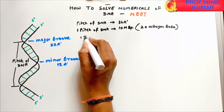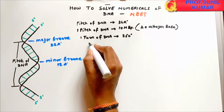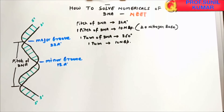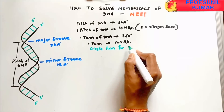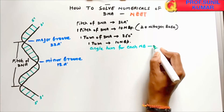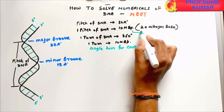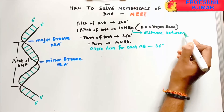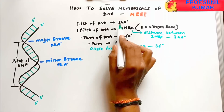One turn of DNA is 360 degrees, and in one turn there are 10 nitrogen base pairs. So the angle per nitrogen base is 36 degrees. Since pitch is 34 Angstroms and there are 10 base pairs per pitch, the distance between two nitrogen base pairs is 3.4 Angstroms (34 ÷ 10).